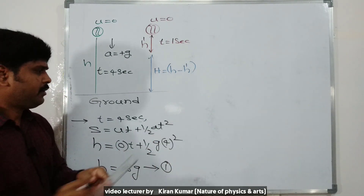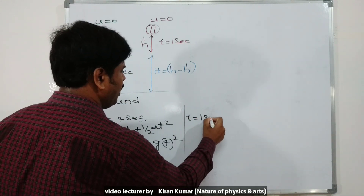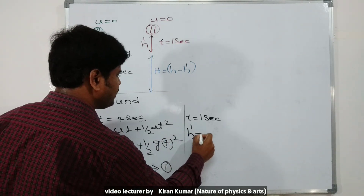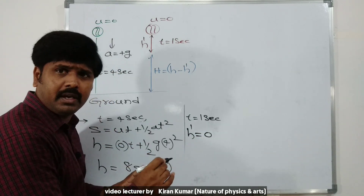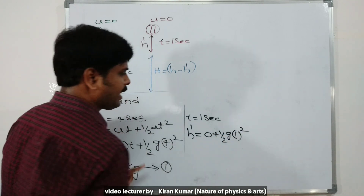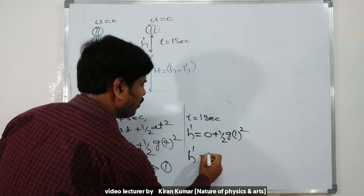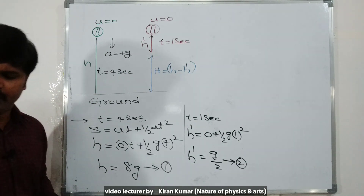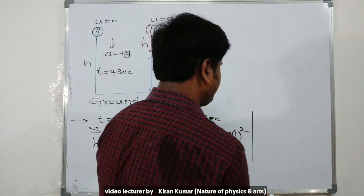Second, for time t equal to one second, using the same formula: h dash equals zero plus half g into one squared. So h dash equals g divided by two. This is taken as equation number two.